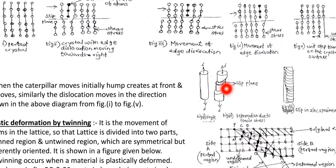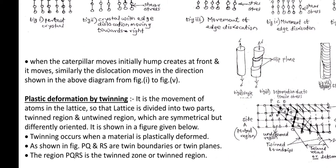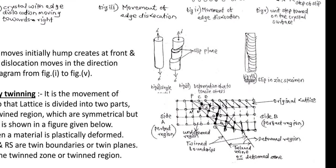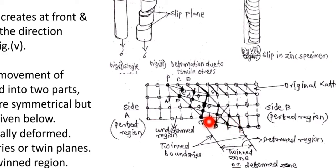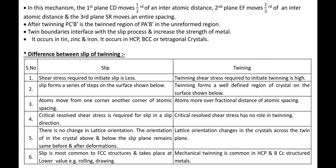Plastic deformation by twinning is the movement of atoms in the lattice such that the lattice is divided into two parts: a twinned region and an untwinned region, which are symmetrical but differentially oriented. Twinning occurs when a material is plastically deformed. In the figure, the deformed region is in the center, with two undeformed regions on either side. On the left and right sides of the deformed region, two mirror images are produced — this portion is the mirror image of that portion.